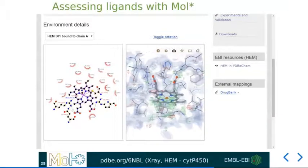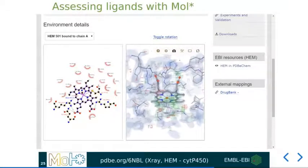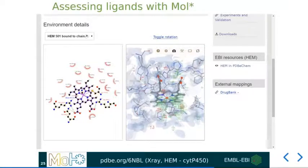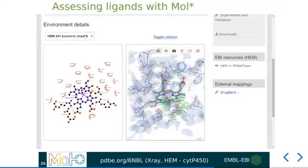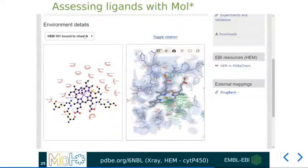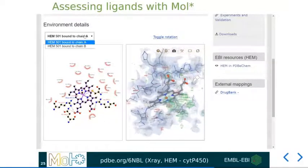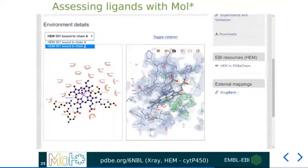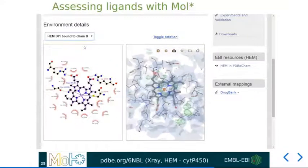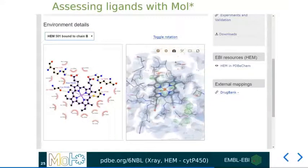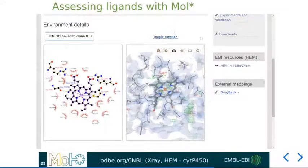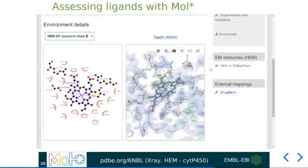If multiple versions of the ligand are in the structure, these can be zoomed to specifically by using the drop-down box at the top to get a refreshed visualization for these ligands.